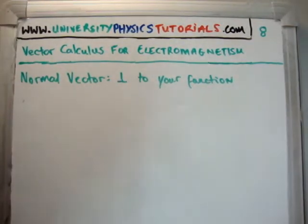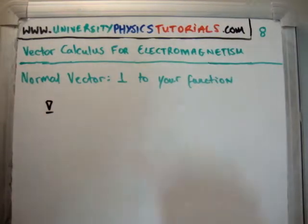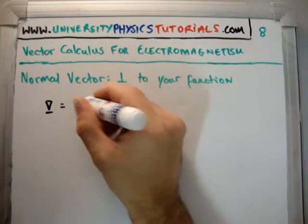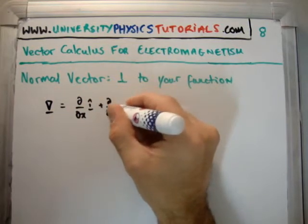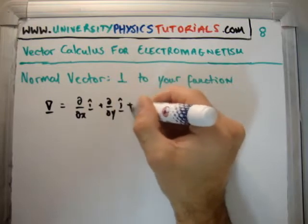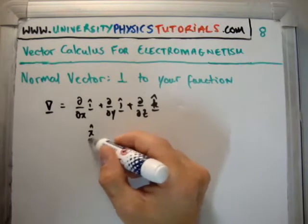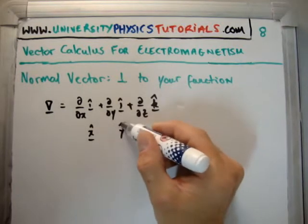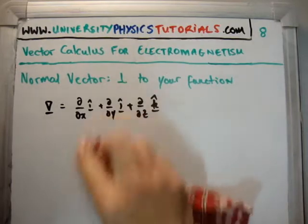Just a quick revision — I'm sure you've seen this before. We define the NABLA operator, and I'm going to call it always a vector. We define it as del/del x in the i-hat direction, plus del/del y in the j-hat direction, plus del/del z in the k-hat direction. Sometimes you might see x-hat, y-hat, and z-hat, but my convention is i, j, k — it just makes it easier.